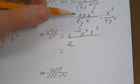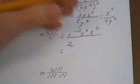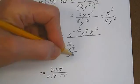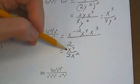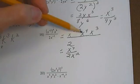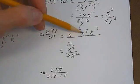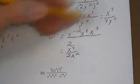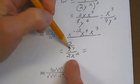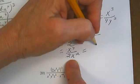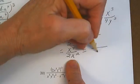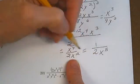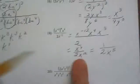That is the same as x to the 7th over 2x to the 12th. X to the 7th came from x to the 4th times x cubed. I moved the x to the negative 3 to the denominator and changed the sign. X to the 7th over x to the 12th is the same as 1 over x to the 5th, and I still have my original 2 in the denominator.